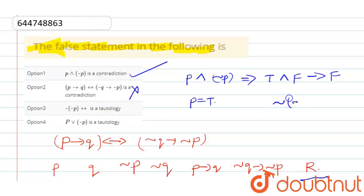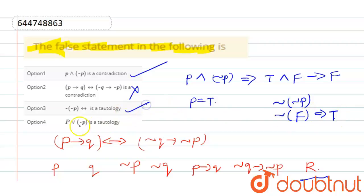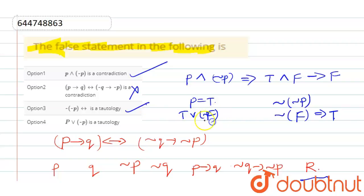Let's check option 3: negation of negation p. Suppose p equals true; negation of true is false, negation of false is true — this is a tautology, so it is correct. Option 4: p OR negation p — true OR false gives true, which is also a tautology and a right statement.